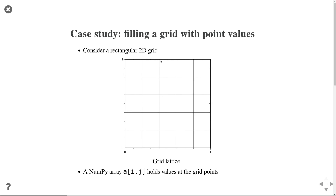To make this interesting, let's look at a case study where we want to improve our implementation. Imagine we have a rectangular 2D grid, and we would like to create a NumPy array A which holds function values on each node on that grid. After creating this NumPy array, we can ask what is the function value at index i,j and it will return the function value at that specific point.